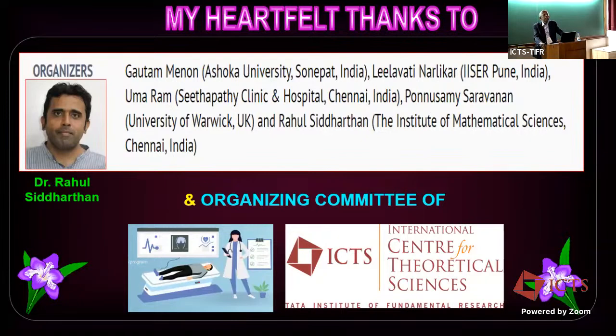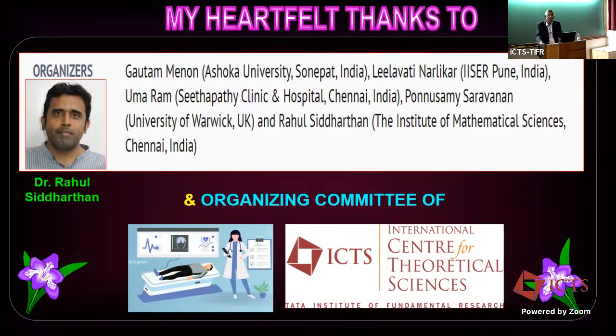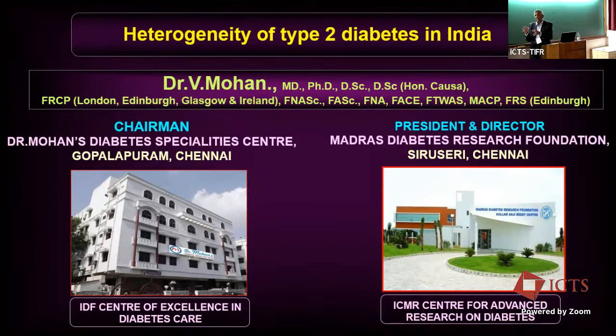He hopes to share some work to show how complex one disease can be. When you think of diabetes, people often ask how you can spend 50 years working on one disease without getting bored. At the end of five decades, he feels he knows less about diabetes than when he started — it gets so complex. That is why the topic is called the heterogeneity of type 2 diabetes.